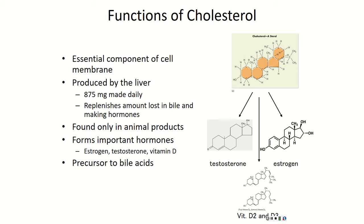Without cholesterol, the cell membrane would have a lot more rigidity and wouldn't function properly. But we can go more in depth. Cholesterol is the backbone and base for making testosterone and estrogen. Cholesterol is taken in or made by our liver to make different hormones that function in the body. There's also vitamin D — we call it a vitamin, but it functions as a hormone, helping capture and encapsulate calcium into the bone structure. Vitamin D2 and vitamin D3 are based off that cholesterol backbone. So without cholesterol, we're in really bad shape. Cholesterol is essential to the human body.